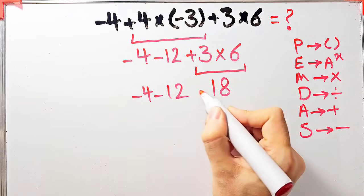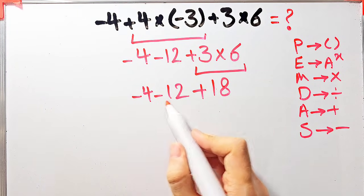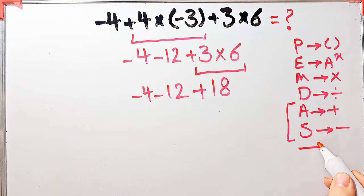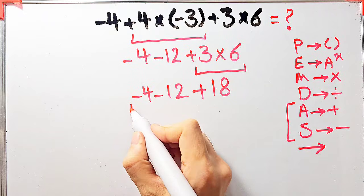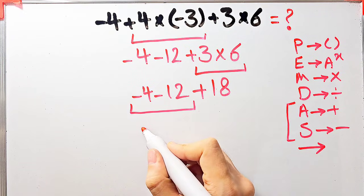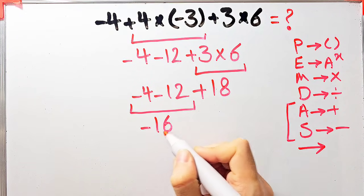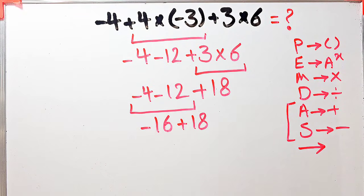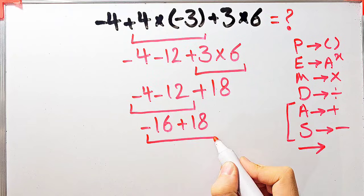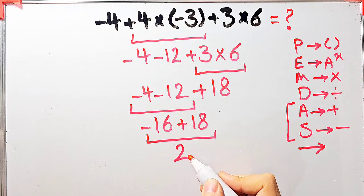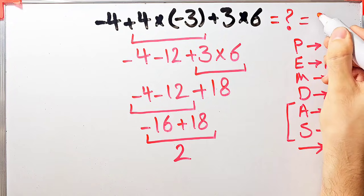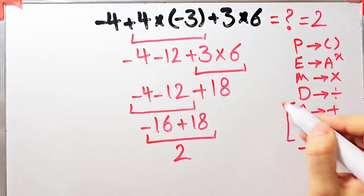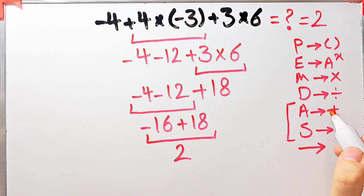Now we have subtraction and addition. Addition and subtraction have the same level of priority, so we start from the left: negative 4 minus 12 equals negative 16. Now we have negative 16 plus 18, which equals 2. The final answer equals 2. If you want the right answer you must follow the PEMDAS rule — if you don't, you get the wrong answer.